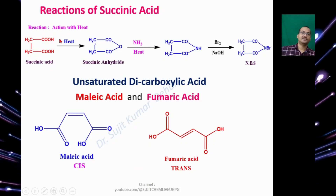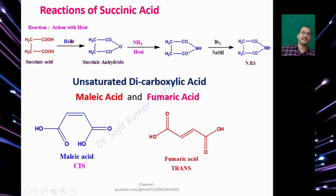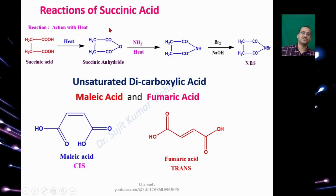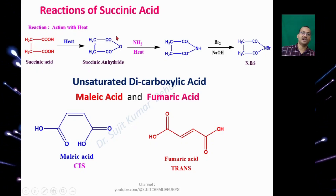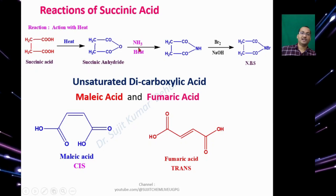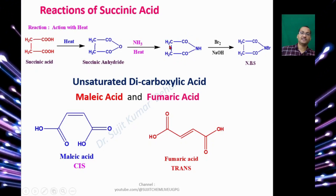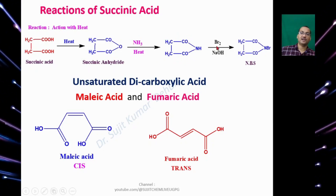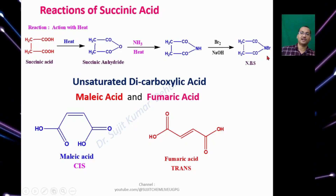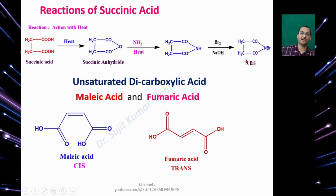Reactions of succinic acid: succinic acid upon heating gives succinic anhydride. Upon reaction with Ammonia you get an intermediate amide, and that upon reaction with Bromine and Sodium Hydroxide gives NBS — N-Bromosuccinimide.